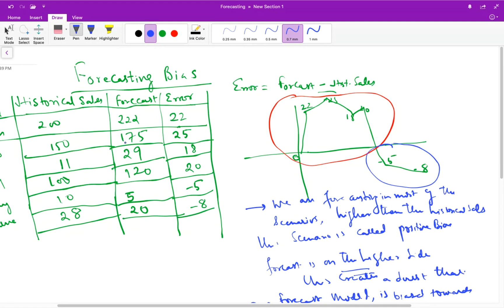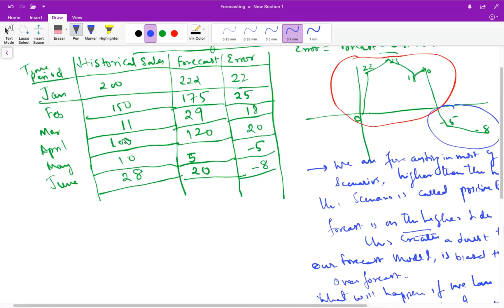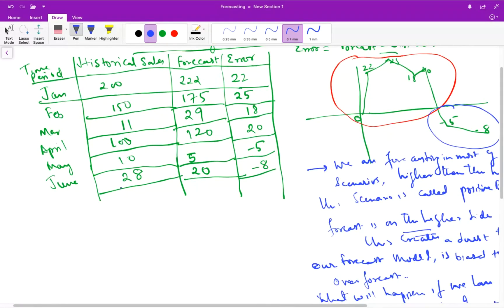So the formula for forecasting bias is equal to cumulative error divided by mean absolute deviation. This is one of the formulas. There are various other formulas which we can use to compute the forecasting bias. But this is one of the formulas.